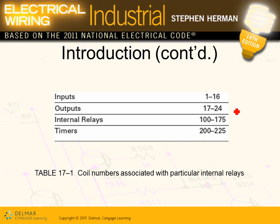When you program PLCs, they give them numbers. Typically 1 through 16 are assigned to the inputs, 17 through 24 are assigned to the outputs. Internal relays start from 100 all the way to 175, and timers are assigned 200 to 225. They don't overlap — as far as the PLC is concerned, it doesn't distinguish, so you have to assign them separate unique numbers.